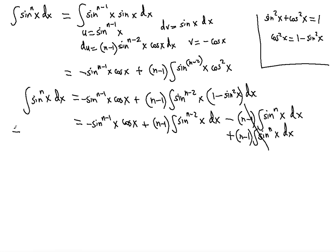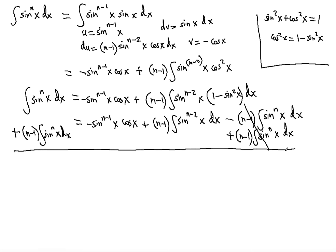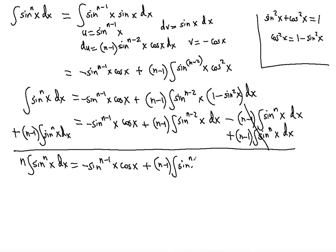We add it to both sides. As a result, the coefficient of the integral on the left becomes n minus 1 plus 1, giving us n times the integral of sine^n x dx equals negative sine x to the n minus 1 power times cosine x, plus the n minus 1 coefficient times the integral of sine to the n minus 2 of x dx.